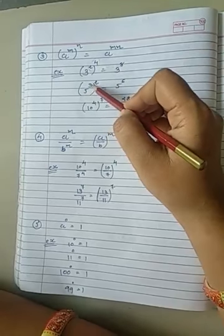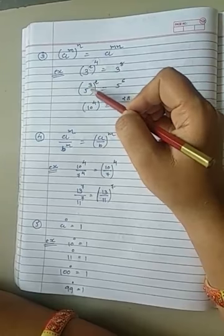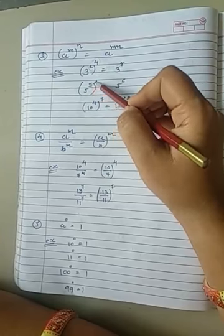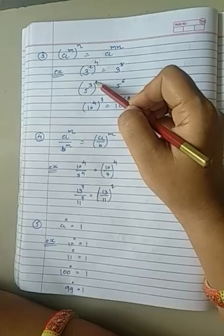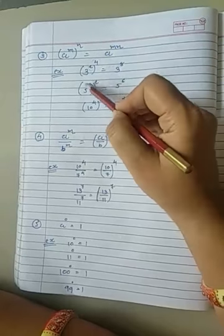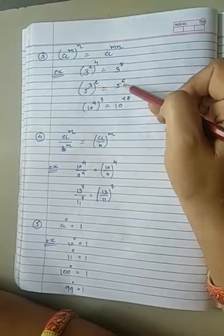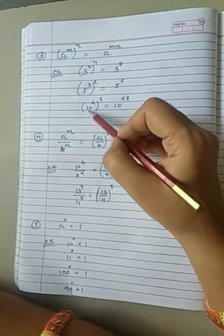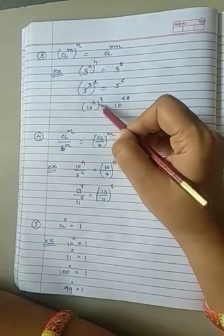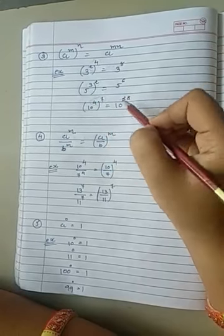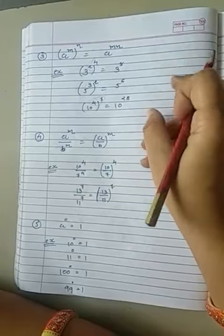5 raised to 3, also raised to 2. So in this situation, just multiply these 2. 3 times 2 is 6. So here 5 raised to 6 will be the answer. Similarly, 10 raised to 4 and raised to 7. So multiply these 2, you will get 28. 10 raised to 28. This was the third rule.